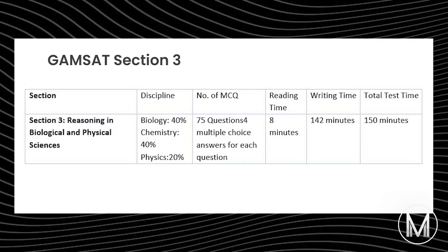For GAMSAT section 3 — reasoning in biological and physical sciences — it will be split between biology, chemistry and physics in a proportion of 40, 40 and 20% respectively. You'll have 75 questions, all multiple choice with 4 answer options. You'll have 8 minutes reading time and 142 minutes writing time, with a total test time of 150 minutes. These timings allow you to spend approximately 2 minutes per question.